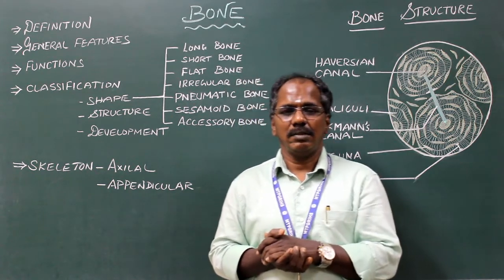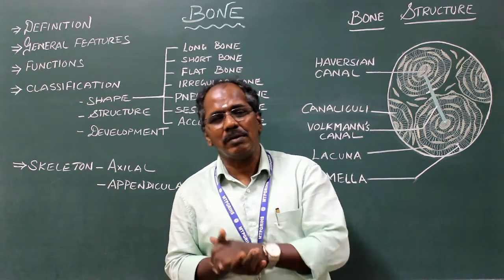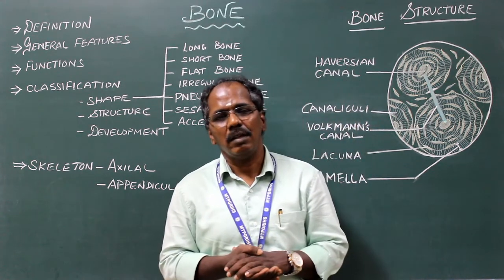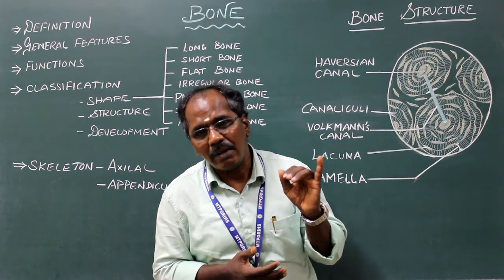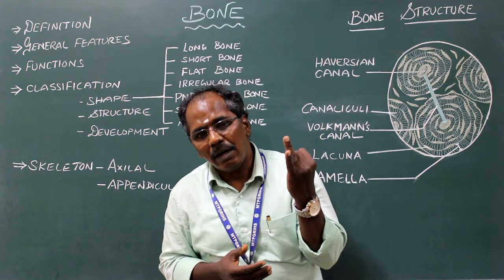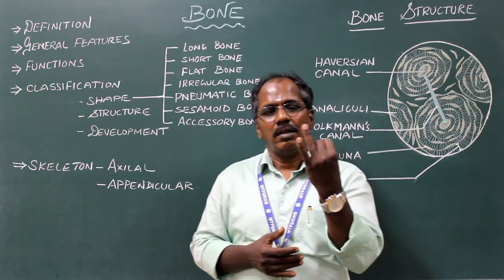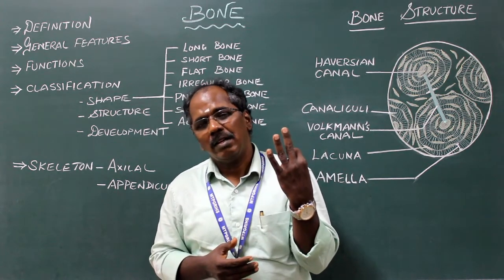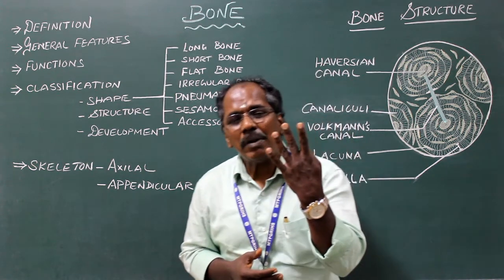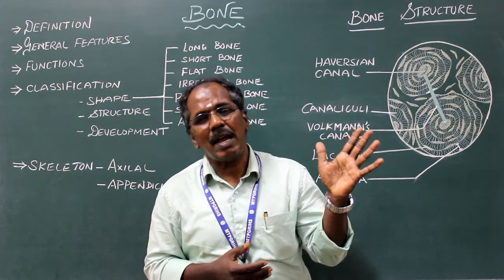Osteoclasts are derived from red bone marrow. Functions of bone: they form the skeletal framework of the body. They give attachment for tendons, muscles, fascia and ligaments. They protect important organs like the brain, lungs and heart. It is an important hemopoietic center. It is a storage center for calcium.